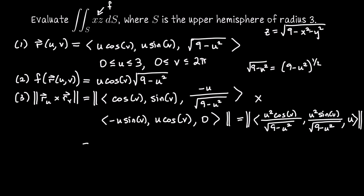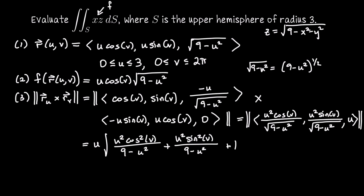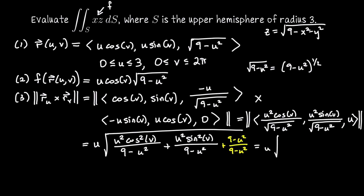Since u appears in every coordinate and u ≥ 0, I factor u out front. Inside the radical we then have u² cos²(v)/(9 − u²) + u² sin²(v)/(9 − u²) + 1. Writing 1 as (9 − u²)/(9 − u²), the numerator becomes u² cos²(v) + u² sin²(v) + 9 − u² = u² + 9 − u² = 9, and the denominator is 9 − u². So the length of the cross product is 3u divided by √(9 − u²).